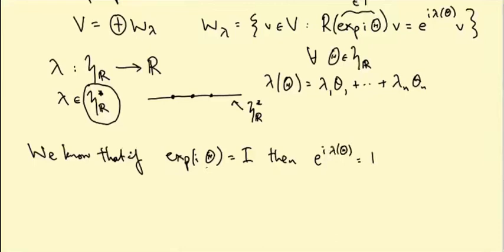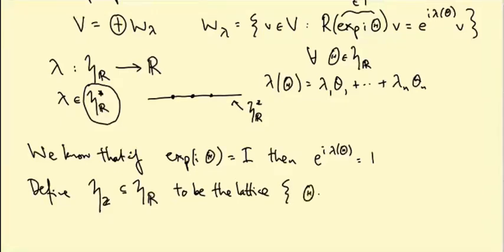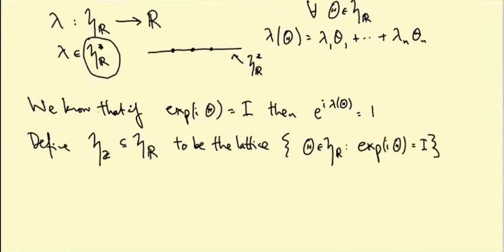What I'm going to do is I'm going to define a lattice, which I'm going to write as H_Z inside little H_R, to be the lattice of the thetas in little H_R such that X^{i*theta} equals the identity.